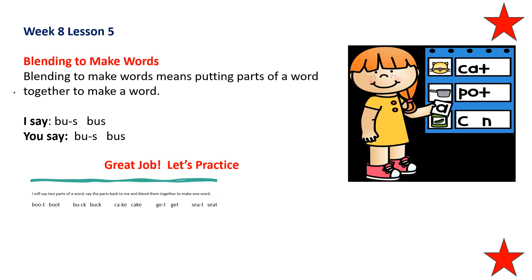Alright, blending to make words. Blending to make words means putting parts of a word together to make a word. Buh, sss — buss. Do you hear the two parts? Buh, sss — buss. Now you try it. Repeat after me: buh, sss, buss. Great.